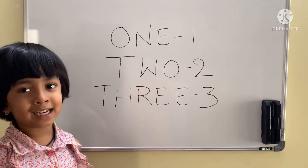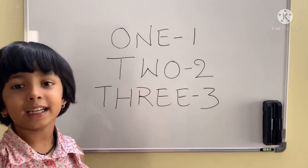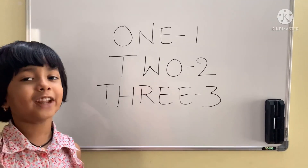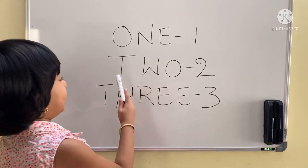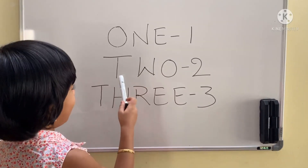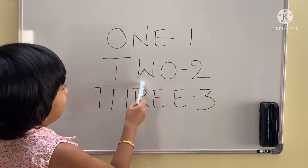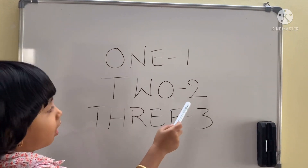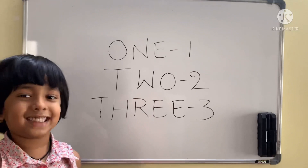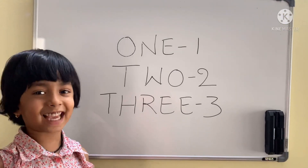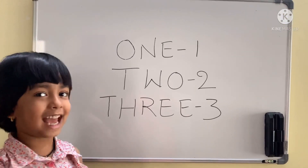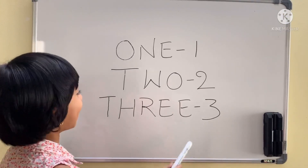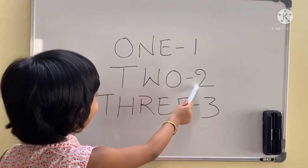Children, repeat after me: T, W, O. What is the number children? Yes children! Two.